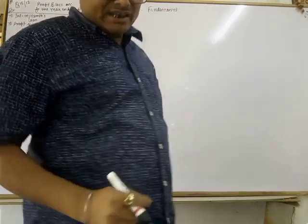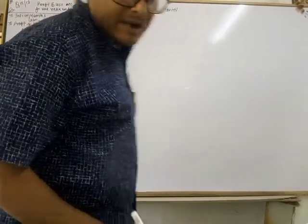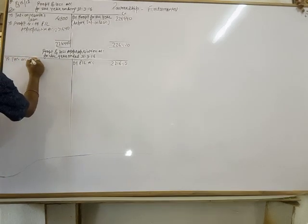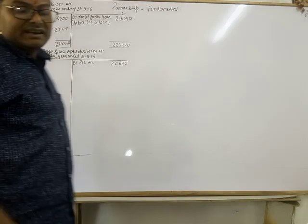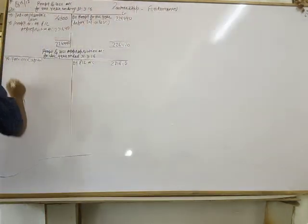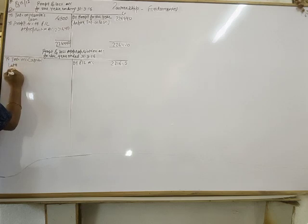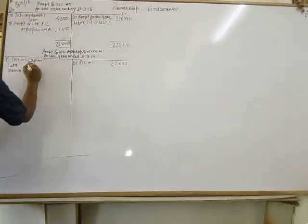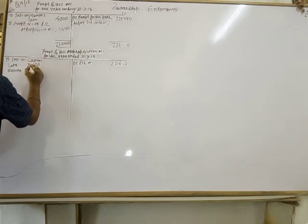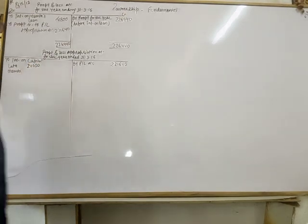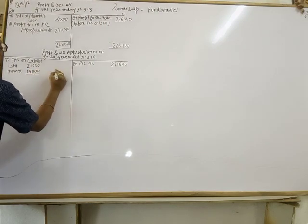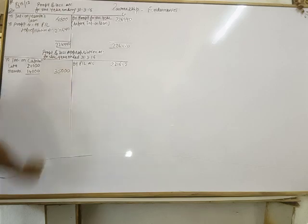According to the partnership deed, interest on capital is to be allowed at the rate of 7% per annum. Lata contributed rupees 3 lakhs, so 7% of 3 lakhs equals rupees 21,000. Mamta's capital is rupees 2 lakhs, so 7% equals rupees 14,000. Total interest on capital equals rupees 35,000.